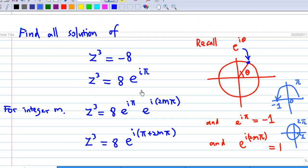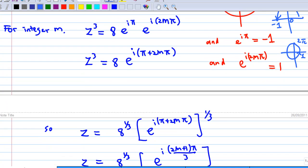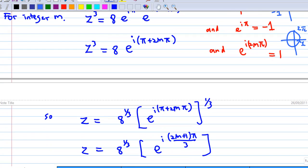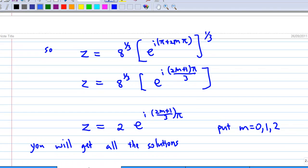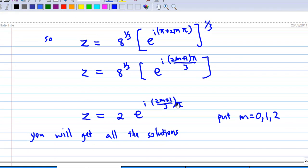But if you say that then you'll be able to find all the cube roots of z now because e to the i pi times e to the i 2m pi is equal to e to the i times pi plus 2m pi. And then taking the cube root of both sides, you'll find that this is i times (2m plus 1) pi over 3. For 8 to the one-third we know it's 2. So z equals 2 times e to the i times (2m plus 1) over 3 pi.